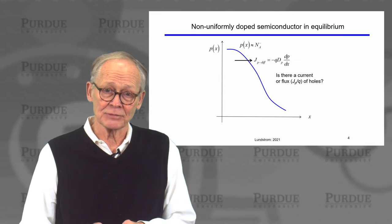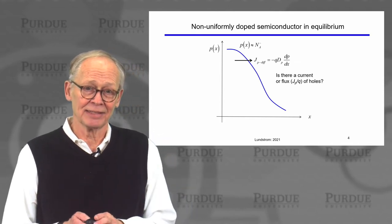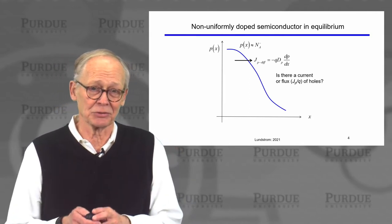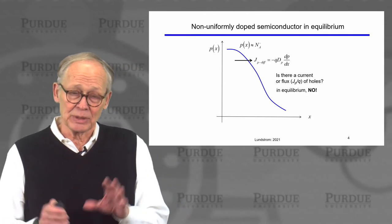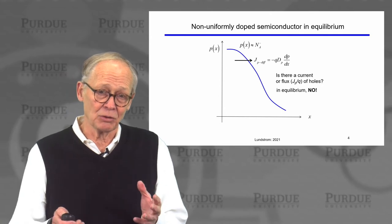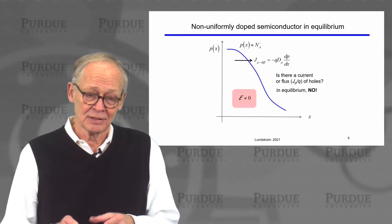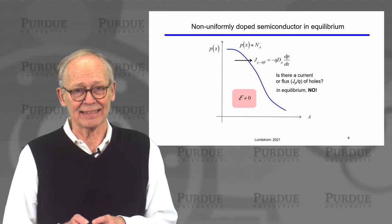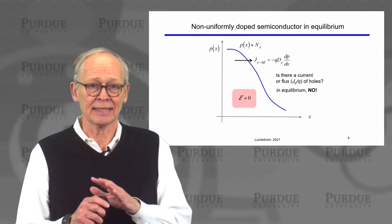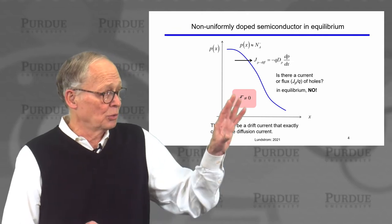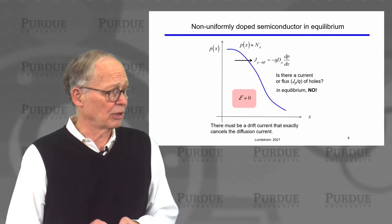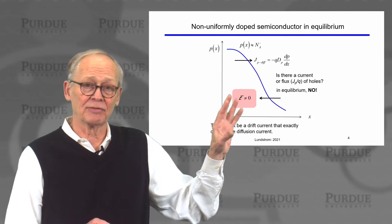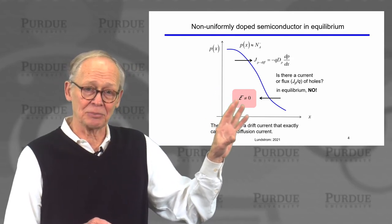Well, is there a current or a net flux of holes? Remember, we're in equilibrium. There can be no current flowing in equilibrium, or we'd have a perpetual motion machine and infinite source of power. So there can't be a current. So we have to conclude no current is flowing. How can there be no current flowing when we have a diffusion current? Well, there must be a drift current. There must be an electric field that is giving us a drift current, exactly equal and opposite in sign to the diffusion current, and giving us zero current everywhere. So we can see that that has to occur from simple physical arguments, and we can deduce that the electric field has to point in the negative x direction, because it will exert a force on the holes that pushes them back and stops them from diffusing.